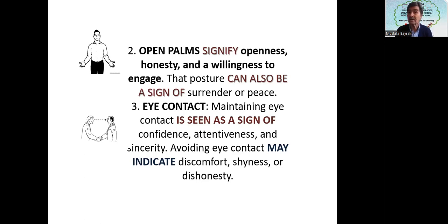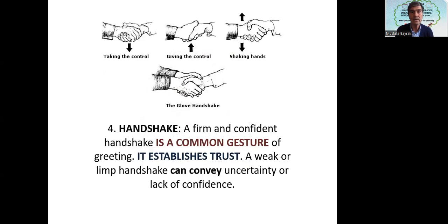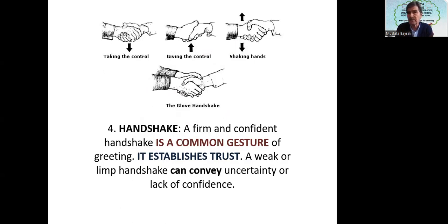Eye contact — maintaining eye contact is seen as a sign of confidence, attentiveness, and sincerity. Avoiding eye contact may suggest the opposite. Taking control — the hand placed over the other hand shows taking control, while shaking hands shows sincerity, trustfulness, and reliance.